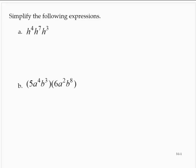One of our rules for exponents tells us that if we multiply numbers that have the same base, we leave the base alone, and we add the exponents.